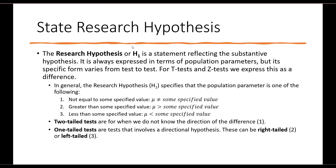Our next step is to state our research hypotheses. The research hypothesis reflects the substantive hypothesis — it is our prediction. It is always expressed in terms of the population parameter, but its specific form varies from test to test. For t-test and z-test, we express this as a difference. In general, the research hypothesis specifies that the population parameter is not equal to some specific value, greater than the specified value, or less than the specified value.